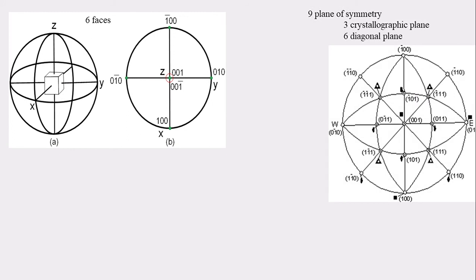For the isometric system, there are nine planes of symmetry, of which three are crystallographic planes and six are diagonal planes. The three crystallographic planes are: the first is the outermost circle, that is the primitive circle; the second is the vertical line; and the third is the horizontal line.